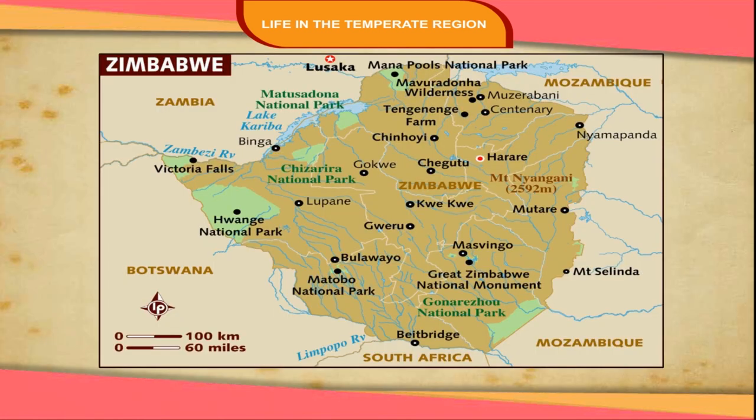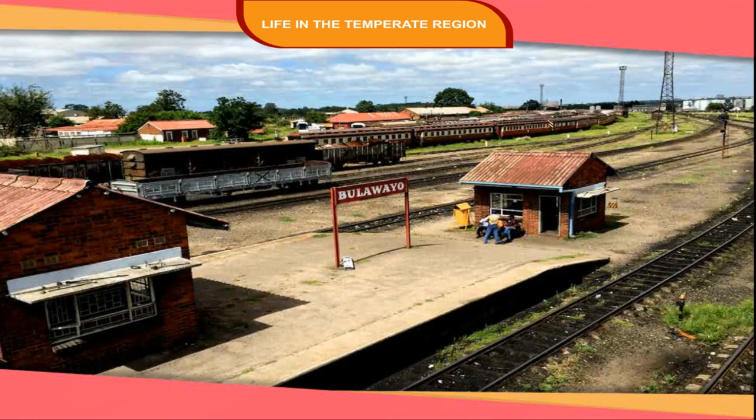Zimbabwe was a British colony in South Africa. Its capital Harare and the city of Bulawayo are well connected by rail, road and air transport.